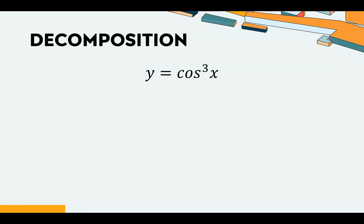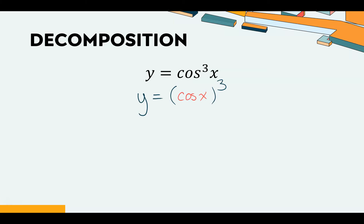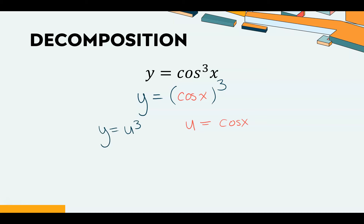When decomposing cos³(x), there are two functions: the cosine function and the cubing function. The outer function is cubing — so I'm thinking of it as something cubed, and that something is cos(x). We call that u, so u = cos(x) and y = u³. The derivative of u³ should feel as easy as the derivative of x³.